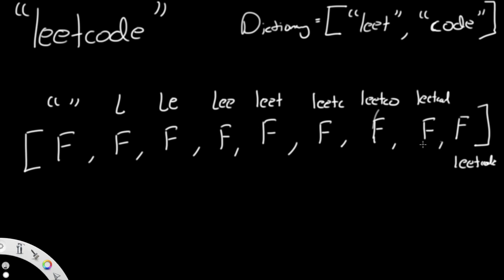The length of this DP array is the length of s plus one, because we need to include the full word as well. Everything starts as false, but we set the first element — index 0, representing the empty string — to true, because an empty string is trivially satisfied. Each subsequent index tells us whether that prefix can be formed from dictionary words.